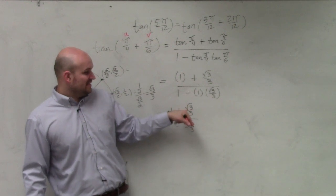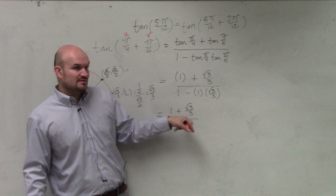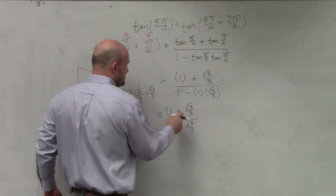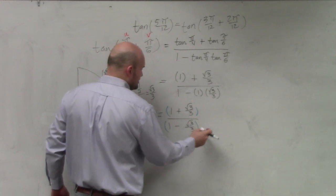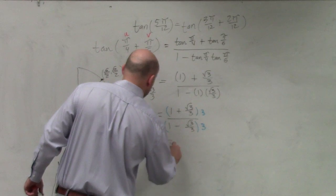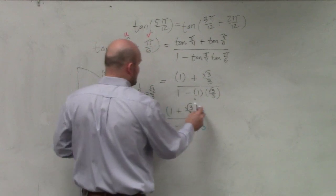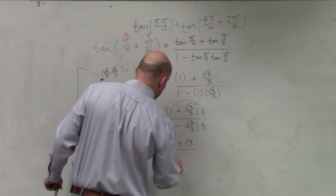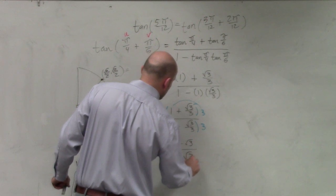So if I want to get rid of dividing by this 3, I should multiply by 3. And as long as you do that to the top and the bottom, you're not changing your answer. You're not changing that expression. So by applying distributive property, I get 3 plus the square root of 3 divided by 3 minus the square root of 3.